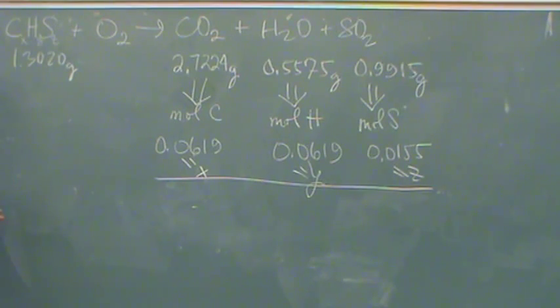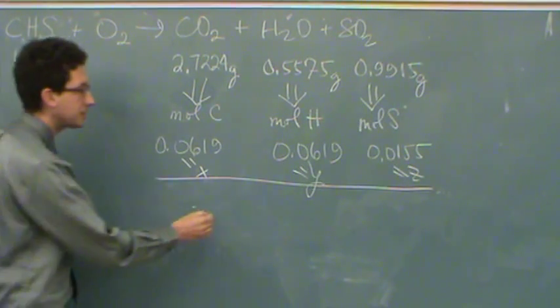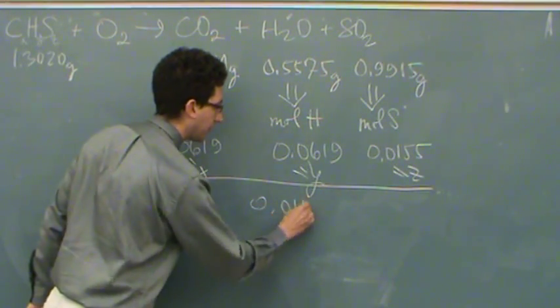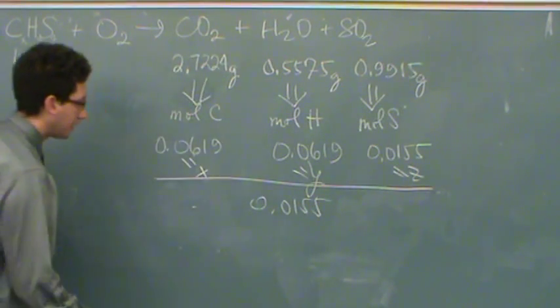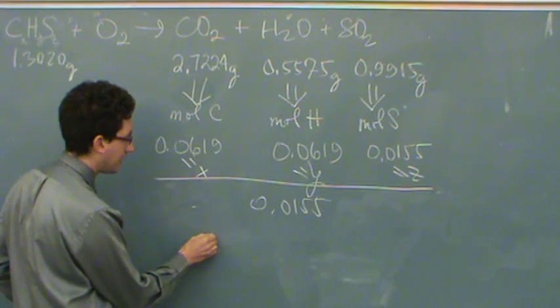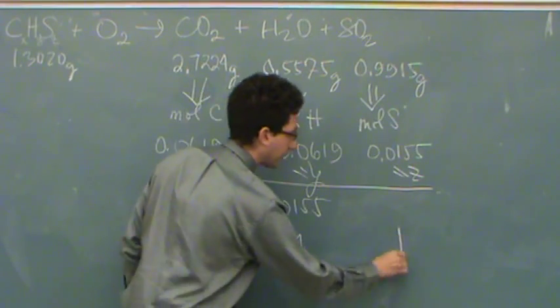according to the law of multiple proportions, you need to divide by the smallest, which will be the 0.155. And in this case, you're going to get, you should get a 4, 4, 4, and a 1.